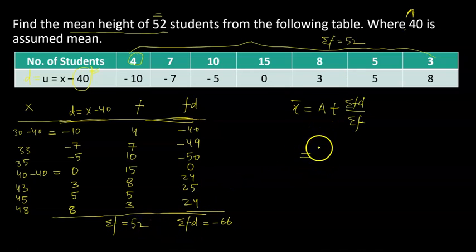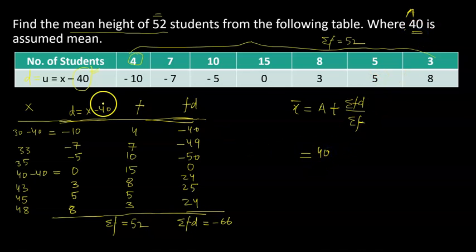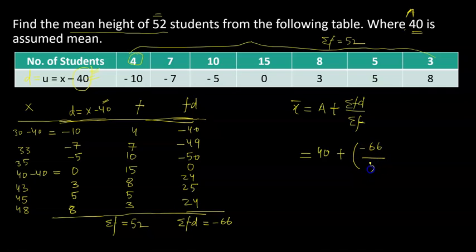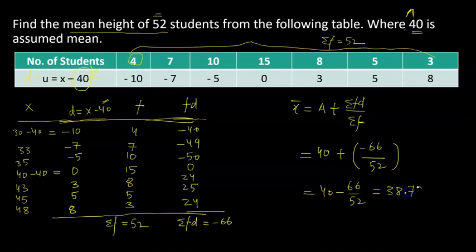Plugging in the values: a is 40 (already given), and summation fd is negative 66, divided by 52. So it is 40 minus 66 divided by 52. Using a calculator, this gives 38.7. So the average marks of the 52 students in this problem is 38.7.